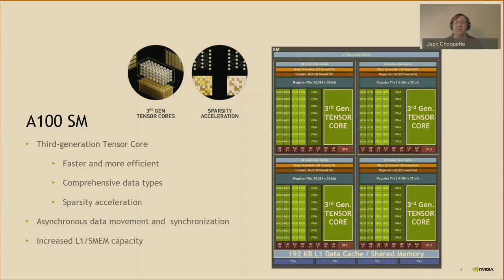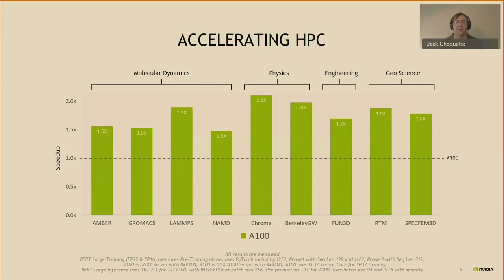We've also added new features to the SM to support feeding data to the TensorCores, as well as improved performance and efficiency for general compute applications. These include new asynchronous data movement instructions and asynchronous barriers, which work together to greatly improve the efficiency of fetching data from memory into the SM. We increased the SM's L1 and shared memory capacity by 50%. A100 achieves substantial performance improvements across HPC applications, running from around 1.5x to over 2x faster than V100 across molecular dynamics, physics, engineering, and geoscience.